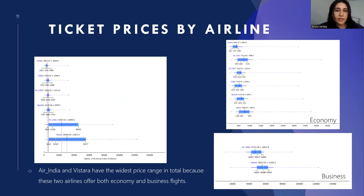Air India and Vistara have the widest price range because these two airlines offer both economy and business flights. Since these two companies have mostly economy flights, their median values have shifted to the left. When we look at economy and business separately, we can see very balanced data again.